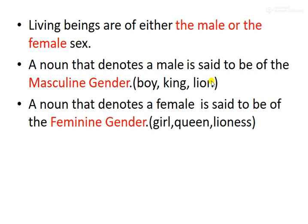A noun that denotes a female is said to be of the feminine gender. If it is female-related, we call it feminine gender. For example: queen, lioness — these are examples of feminine gender. So gender-wise, masculine gender is male and feminine gender is female.